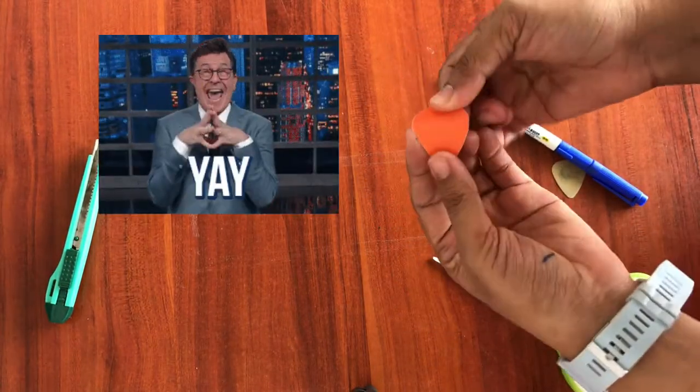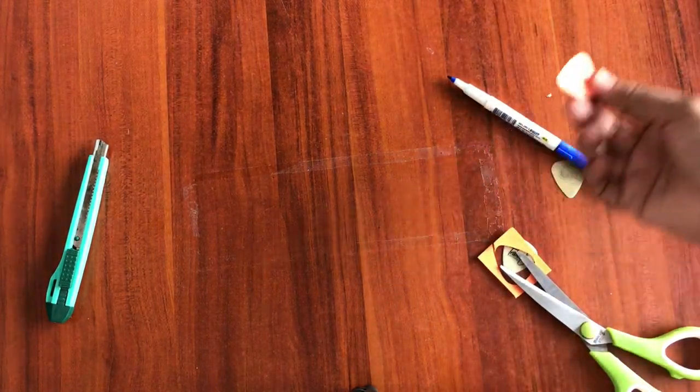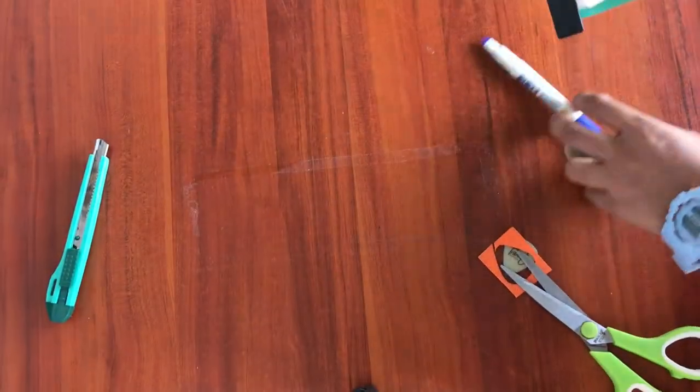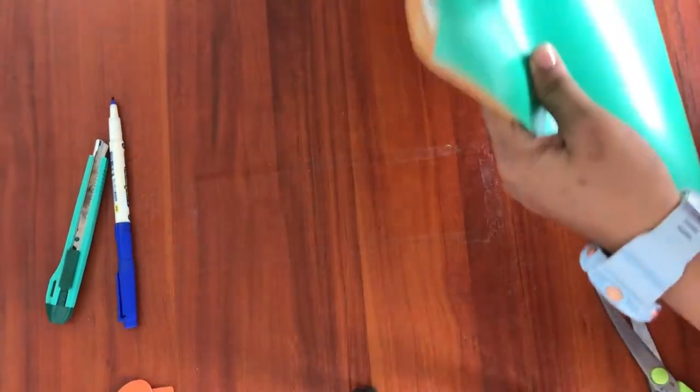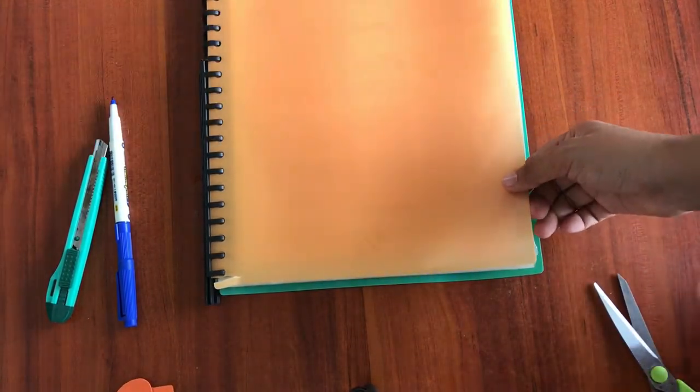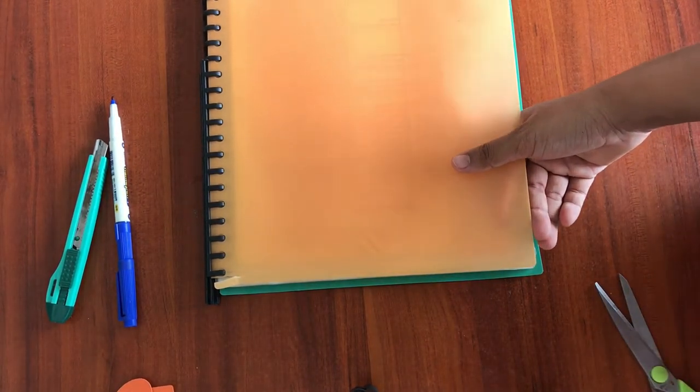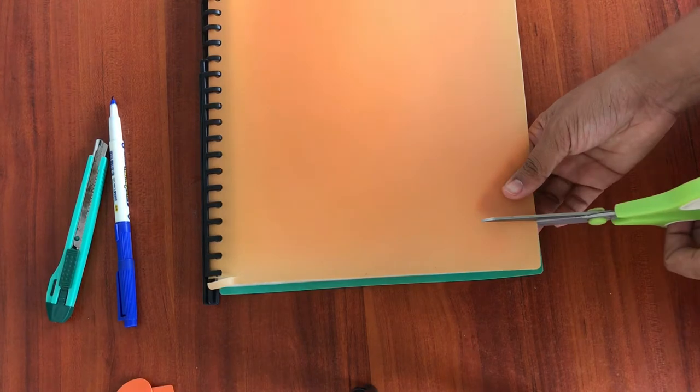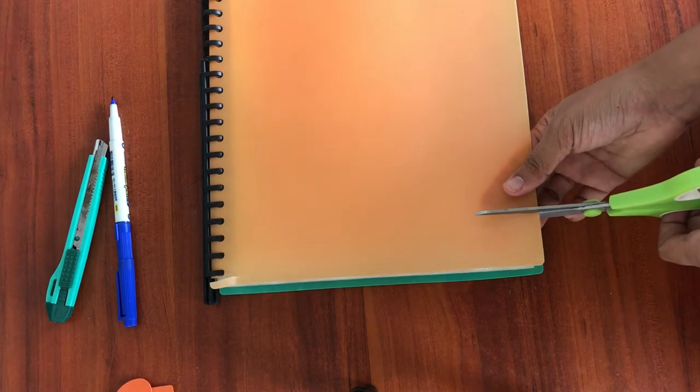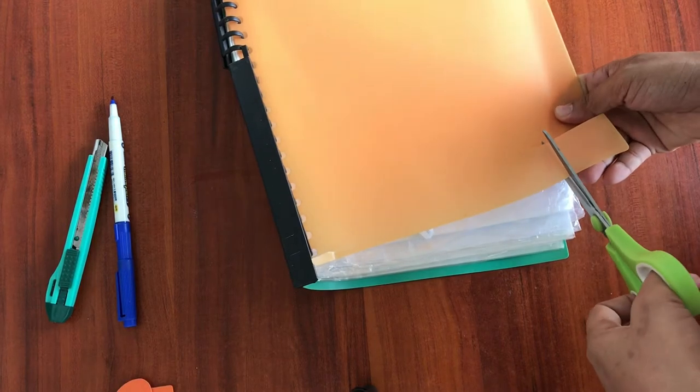Now you get a new one. Okay, now let's make another one from this folder. Make sure that the cover is not too soft and not too hard. We are going to do the same thing, just cut a small piece from it like this.